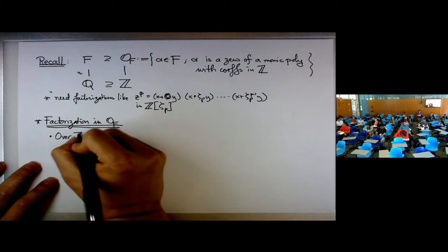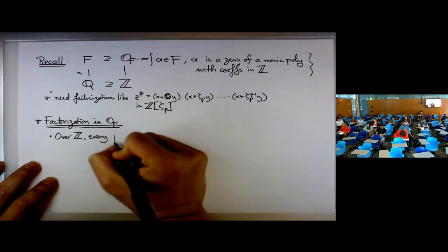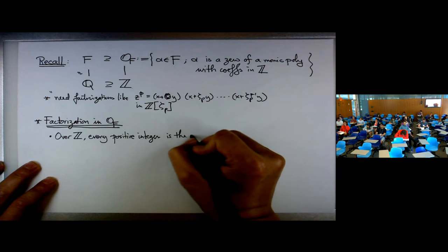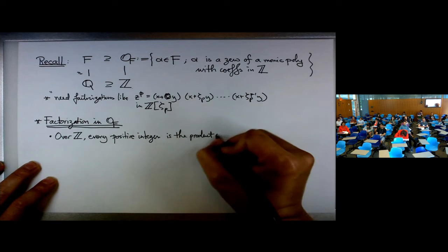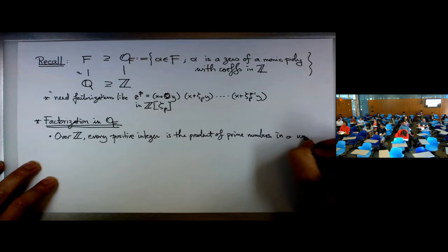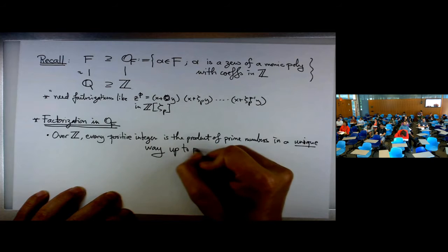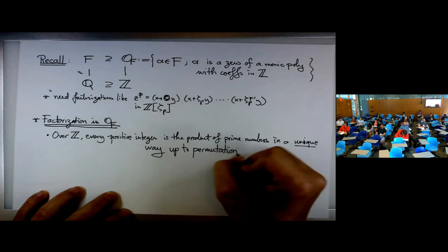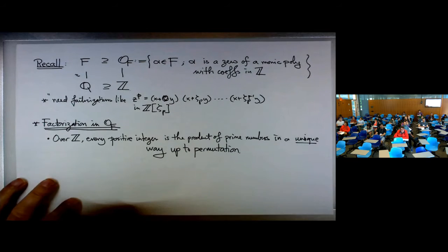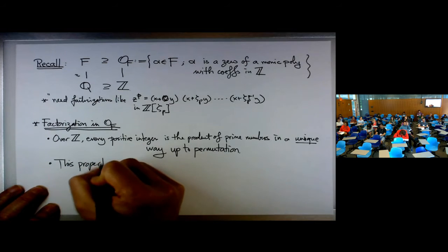Over Z, one of the most important theorems is that every positive integer is the product of prime numbers in a unique way, up to permutation. This is the unique factorization in Z. But the problem is this property might fail in general rings of integers.